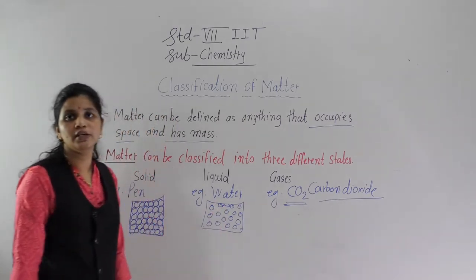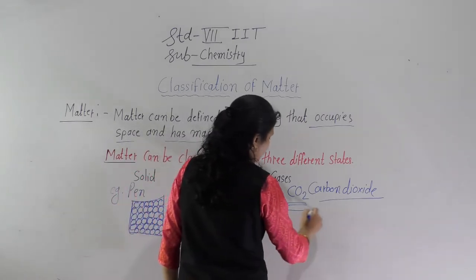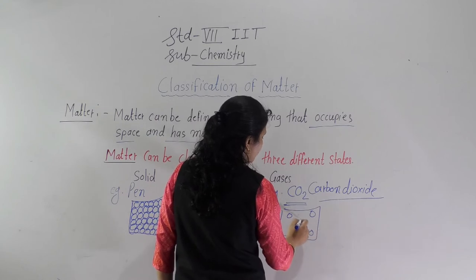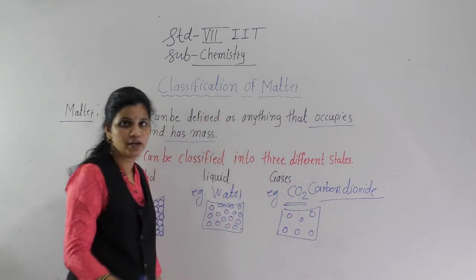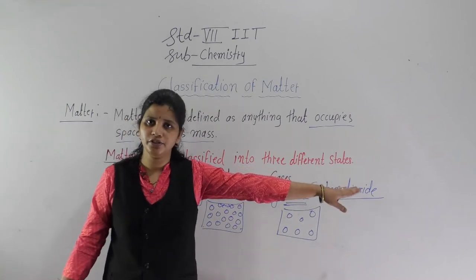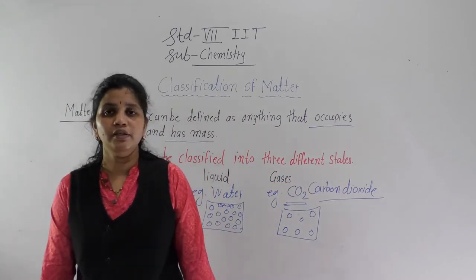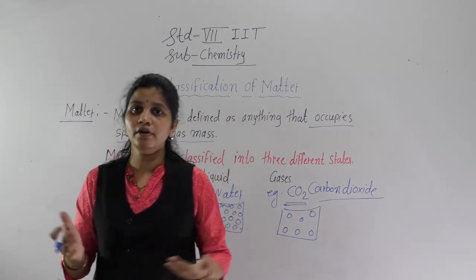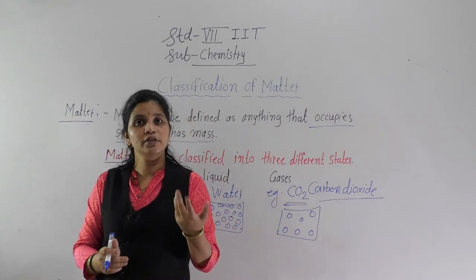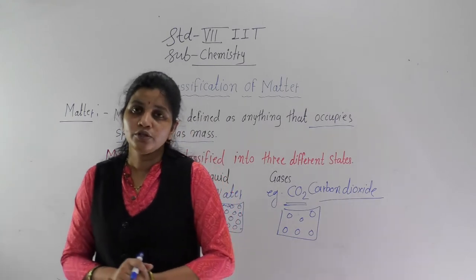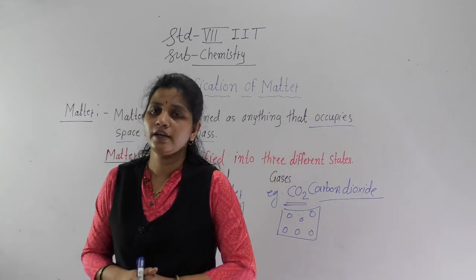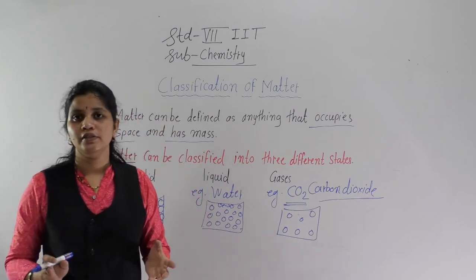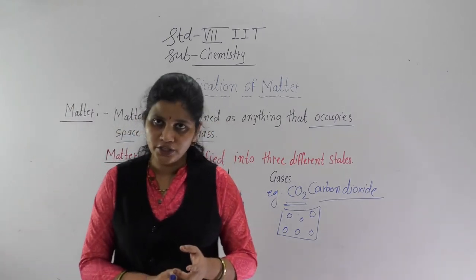Now let us look at the molecular arrangement in the gaseous state. In the gaseous state, the molecules are very far from each other. In this classroom, air is present all around. Gas molecules can flow easily anywhere, and because the molecules are very loosely packed, gases have no fixed volume and no definite shape.